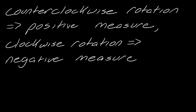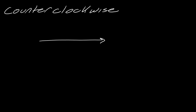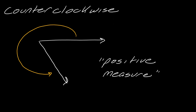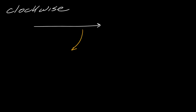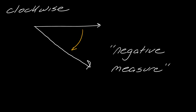Counterclockwise rotation gives an angle with positive measure; clockwise rotation gives an angle with negative measure. So just to be clear about what I mean here: counterclockwise would mean that I'm going this way, and so then I get that other ray — this is the positive measure. And then clockwise, so I swing this way, here's my other ray — this will give me an angle with negative measure.